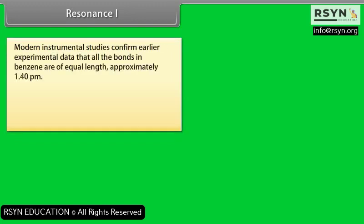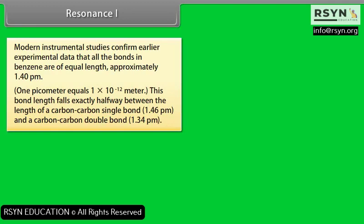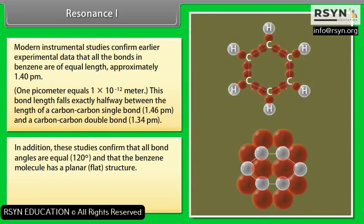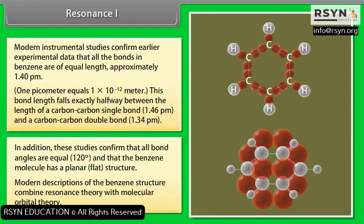Resonance. Modern instrumental studies confirm that all the bonds in benzene are of equal length — approximately 1.40 pm (where 1 pm = 1×10⁻¹² m). This bond length falls exactly halfway between a C–C single bond (1.46 pm) and a C=C double bond (1.34 pm). These studies also confirm that all bond angles are equal at 120 degrees and that the benzene molecule has a planar or flat structure. Modern descriptions of the benzene structure combine resonance theory with molecular orbital theory.